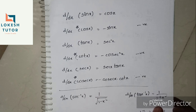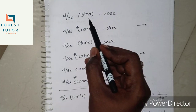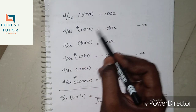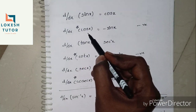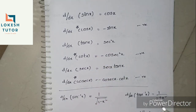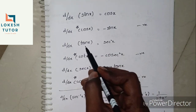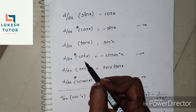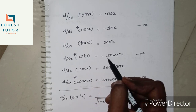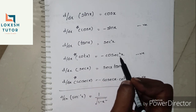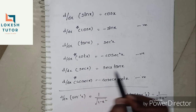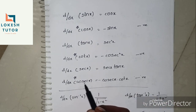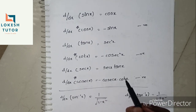Now, trigonometric functions. d/dx of sin x is cos x. d/dx of cos x is minus sin x. d/dx of tan x is sec²x. d/dx of cot x is minus cosec²x. d/dx of sec x is sec x tan x. d/dx of cosec x is minus cosec x cot x.